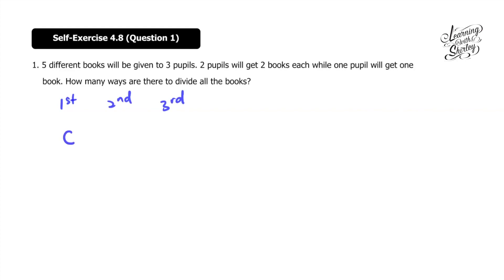We're going to use NCR, so I'm going to write C first. Two pupils will get two books each, means we'll get two here and two here. And then one pupil will get one book, means the third pupil will get only one. So at first, there were five different books, so I'm going to write here five. So number of ways for the first pupil will be 5C2.